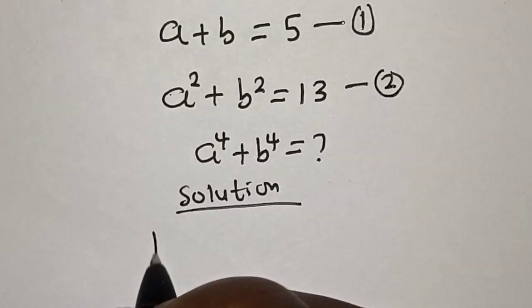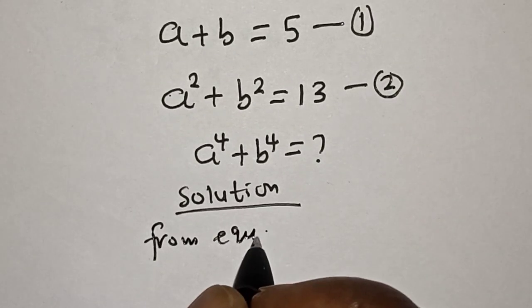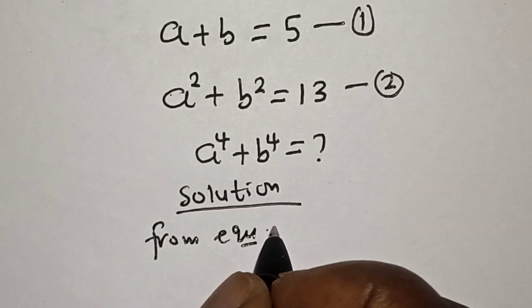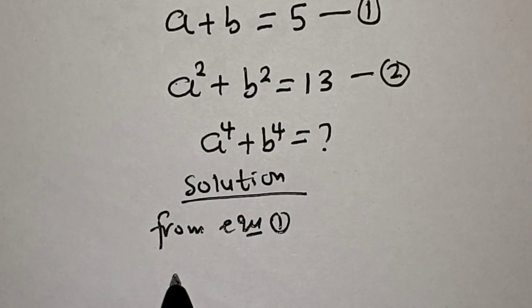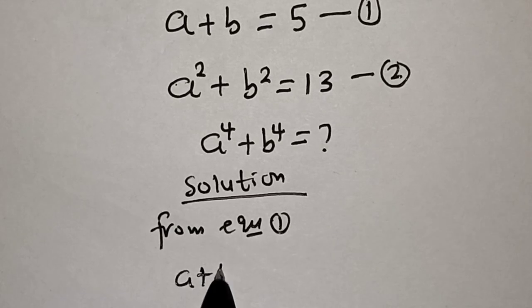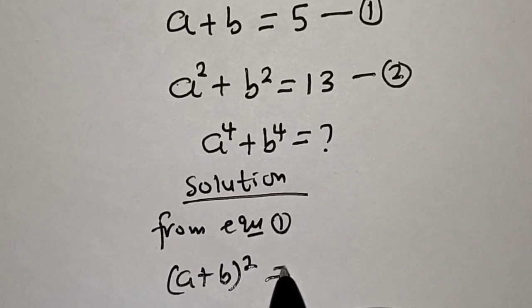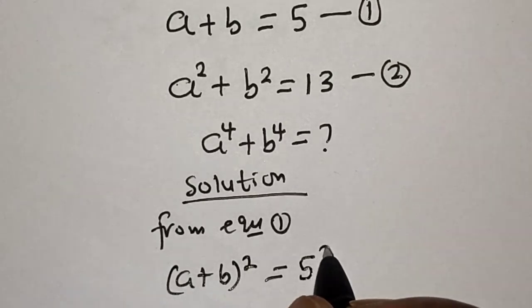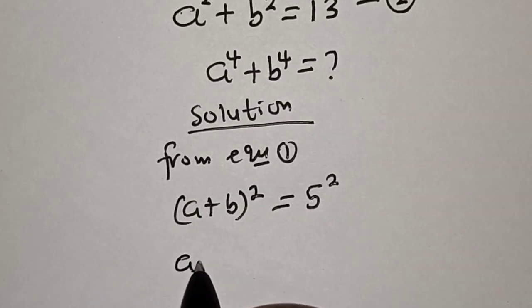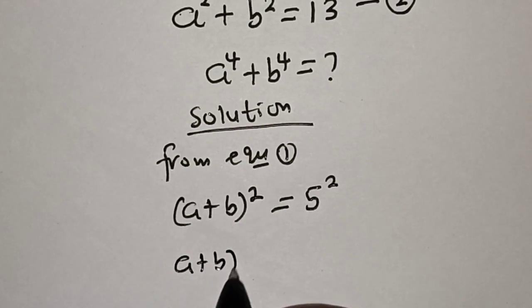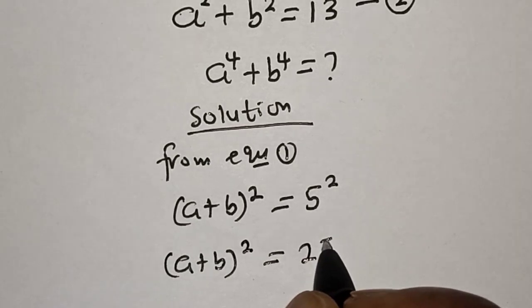Now from equation 1, let's square both sides: a plus b squared is equal to 5 squared, which gives us a plus b squared is equal to 25.